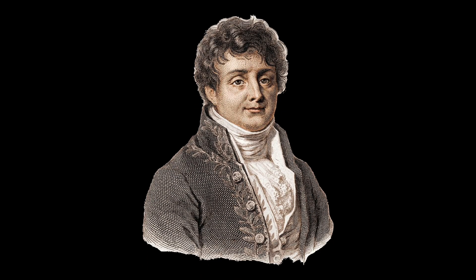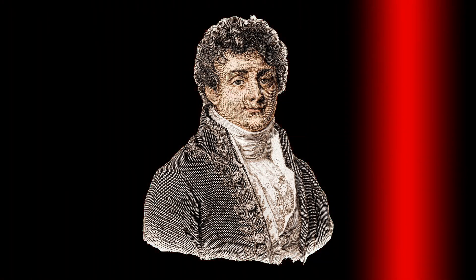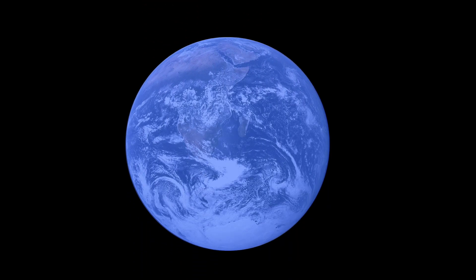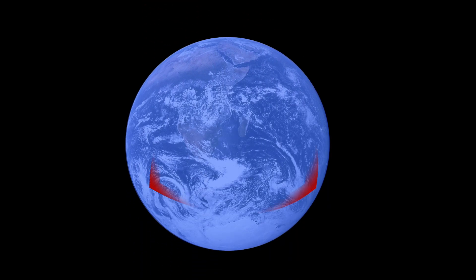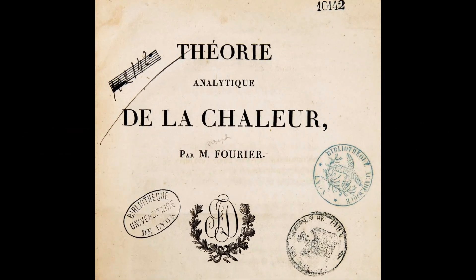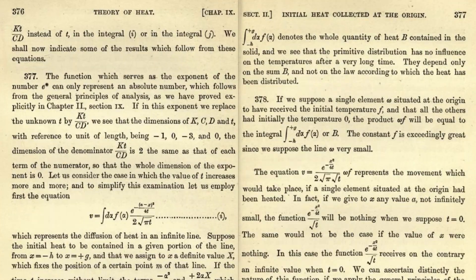Joseph Fourier was interested in the problem of heat distribution and flow — specifically how temperature changes over time within various materials. This was a challenge he encountered while working on estimating the Earth's temperature deep below the surface. Inspired by the success of trigonometric series in explaining oscillations and vibrations, he proposed that similar techniques could be applied to heat. In his seminal work, The Analytical Theory of Heat, Fourier formally introduced what we now call Fourier series.